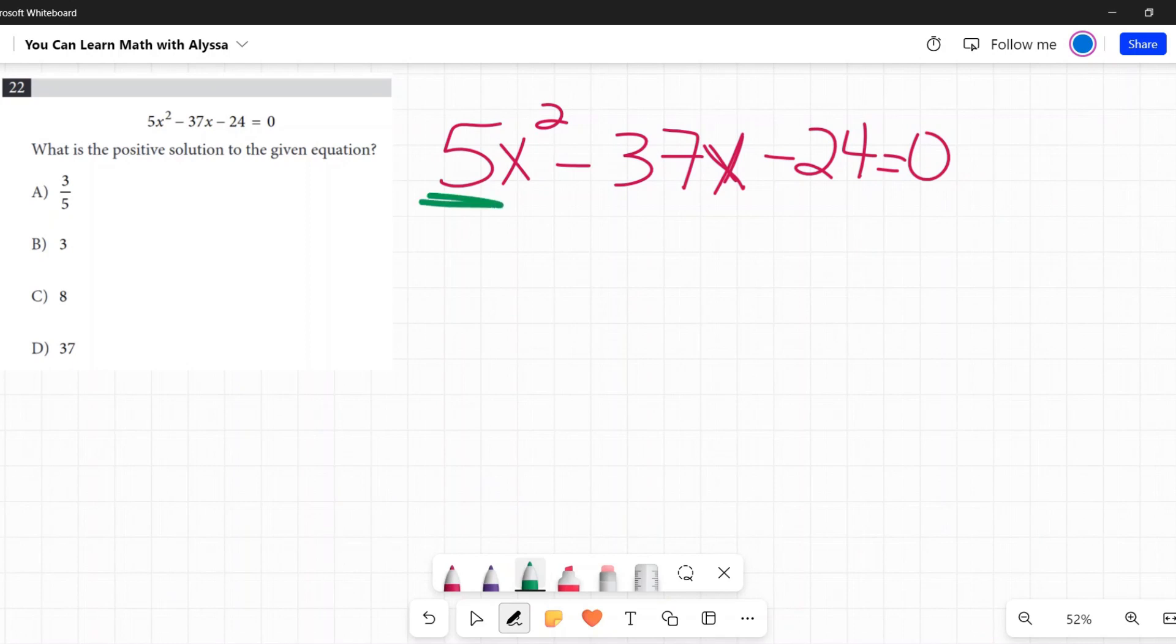So if you're factoring and the first coefficient is not 1, we have 5. What you do first is you multiply those two together. 5 times negative 24. So 5 times negative 24 is negative 120. And then you take that middle number, negative 37. Now, once you have these two numbers, you're trying to do some problem solving here. You're wanting to figure out what two numbers multiply to get 120, but add to get negative 37.